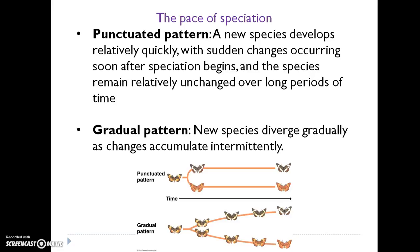You may be wondering about the pace of speciation — how fast does it occur? I'm not going to give you specific numbers because it varies so much with different species. But there are a couple of recognizable patterns, not only in the fossil record but in real time as scientists study evolution in lab and field settings. One of these patterns is the punctuated pattern, in which a new species develops relatively quickly with sudden changes occurring soon after speciation begins, and then the species remain relatively unchanged over long periods of time.